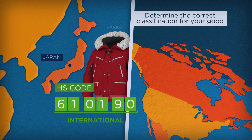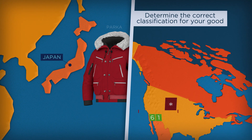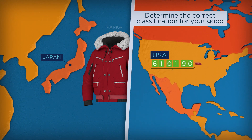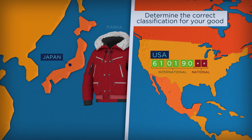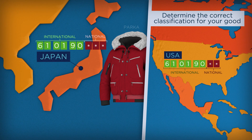Individual countries, however, may add extra digits to specifically identify certain subcategories of goods. For example, if you have exported to the US using their 8-digit code but plan to export the same product to Japan, you will need to find the correct 9-digit tariff code for Japan.